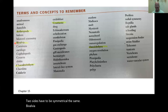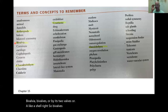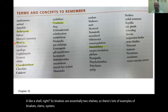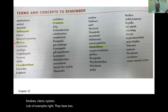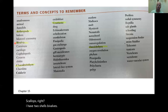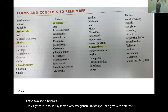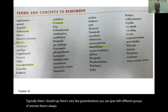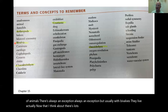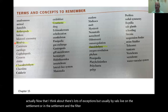Bivalvia — bi means two, valves are like a shell, so bivalves are essentially two shells. Lots of examples: clams, oysters, scallops. Usually bivalves live on or in the sediment and they filter water, though there are always exceptions.